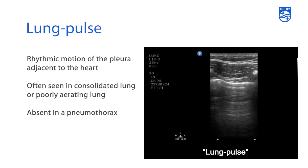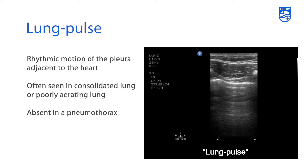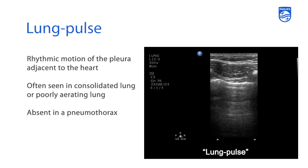Another thing to look for if you do not see lung sliding and are trying to determine whether a patient has a pneumothorax is a finding called a lung pulse. It's a rhythmic motion of the pleura adjacent to the heart, often seen in patients with consolidated or poorly aerated lungs — almost a pulsation of the lungs with the beat of the heart. This finding is absent in a patient with a pneumothorax. So if you do not see lung sliding but you do see a lung pulse, it is less likely the patient has a pneumothorax.